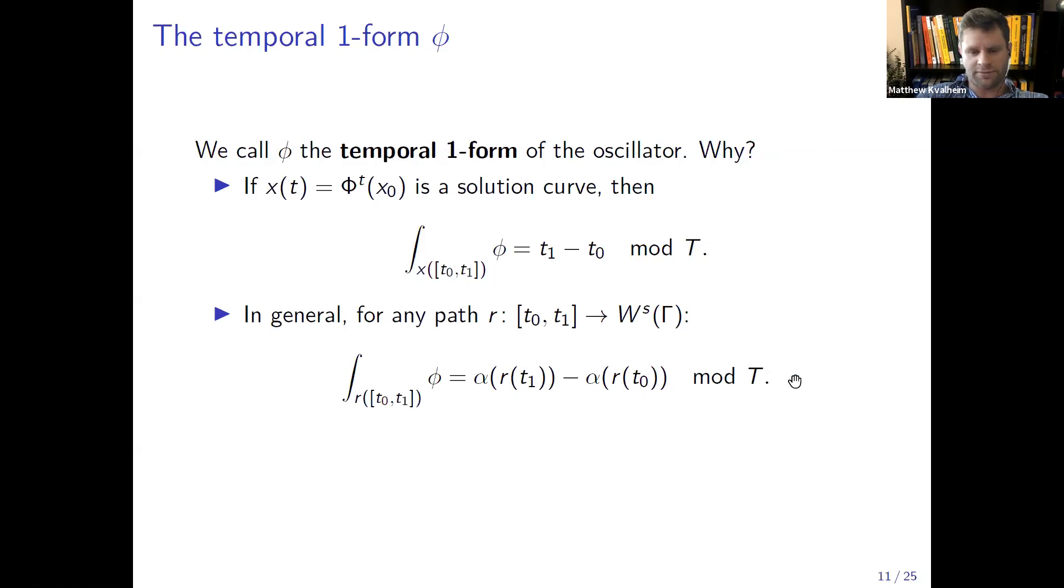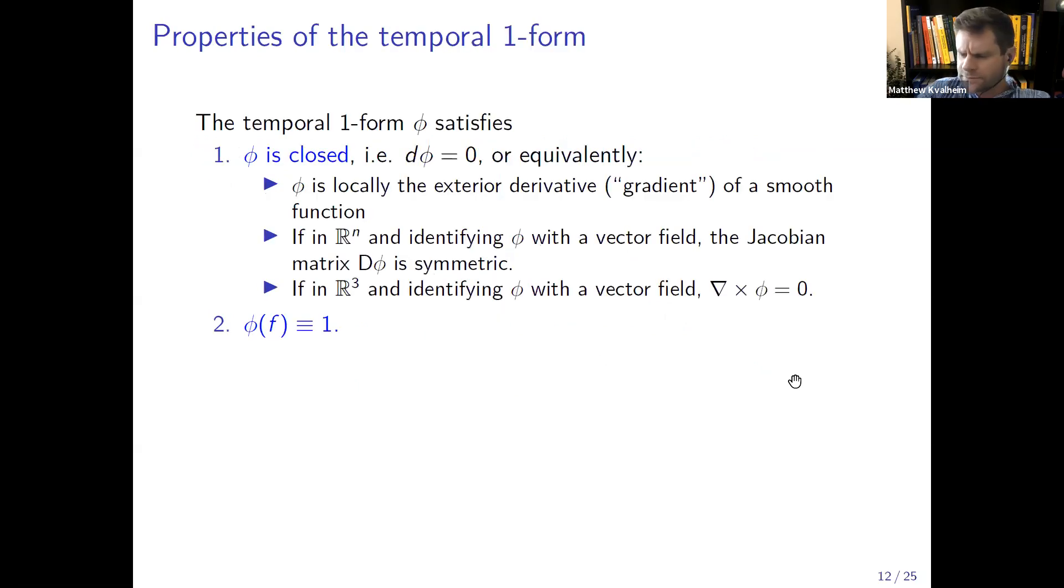The reason for that is if you take any solution curve, any solution curve segment, and integrate φ along it, do the line integral, what you get is just the time difference along the trajectory modulo the period of the oscillator. And in general if you just have any smooth path and you integrate φ along the smooth path, then you just get the difference of the real valued phase at the two endpoints of the path, but modulo the period of the oscillator. The temporal one form satisfies two properties: one is that d of φ is zero, and there are a bunch of ways to state this in terms of vector fields. The simplest way I would just say, if we're in three-dimensional space and we identify φ with a vector field, this condition just means that φ has no curl. And then the second condition is that φ of f is identically equal to one.